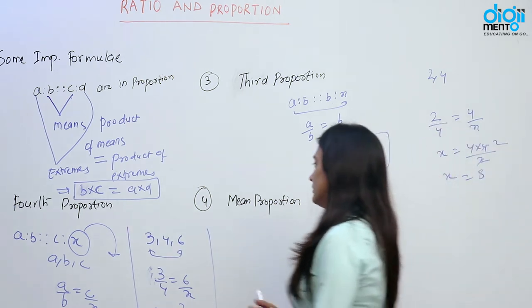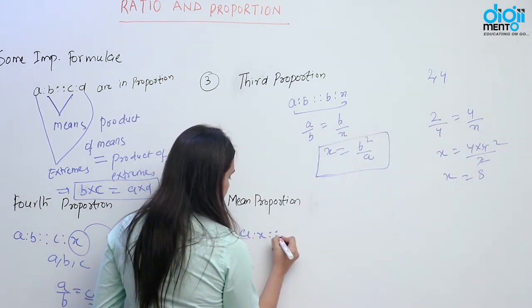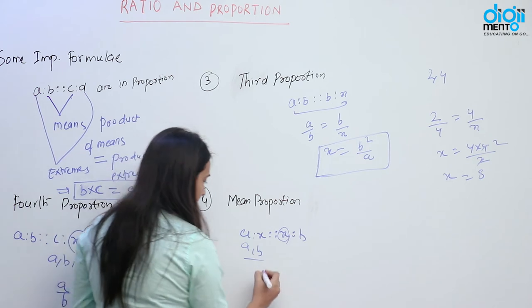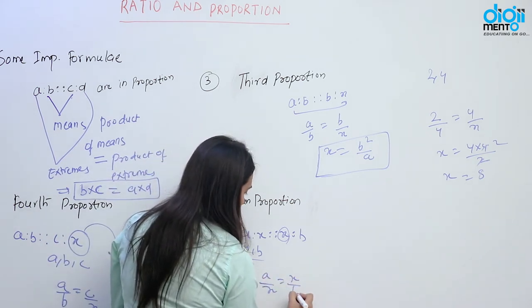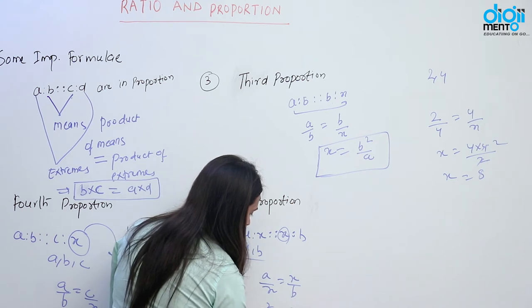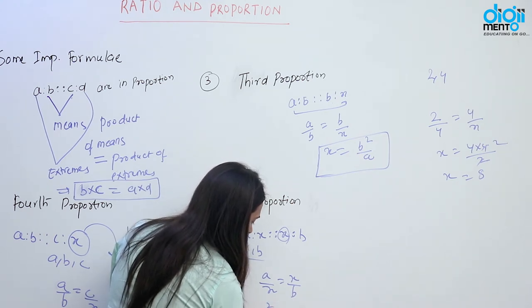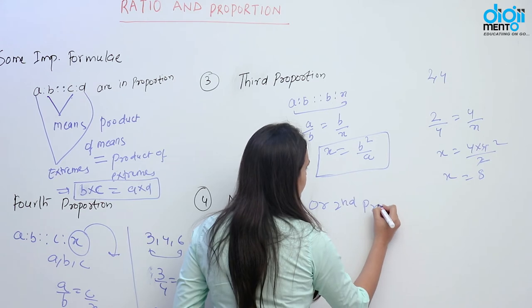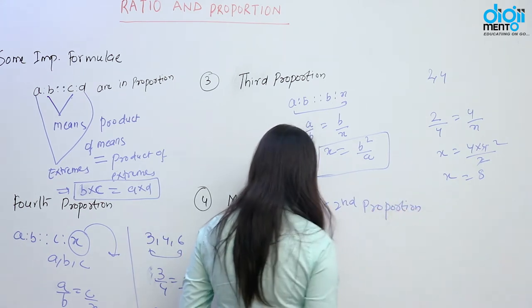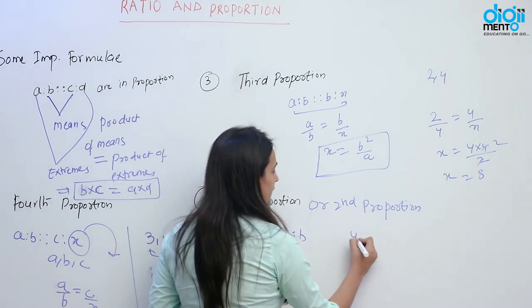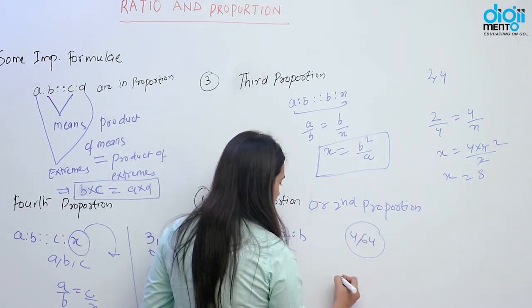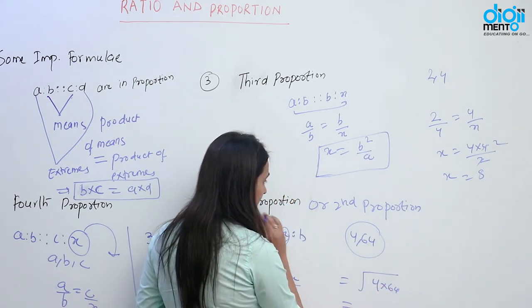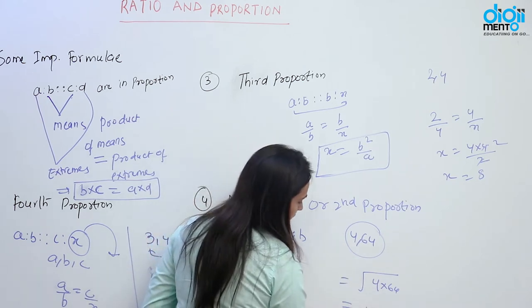Now the last term is mean proportion. X is called the mean proportion of A and B when X is equal to under root of A into B — or you can say the second proportion. If we have 4 and 64 and we have to find the mean proportion, we directly multiply the two numbers and take the square root. That must be equal to 16.